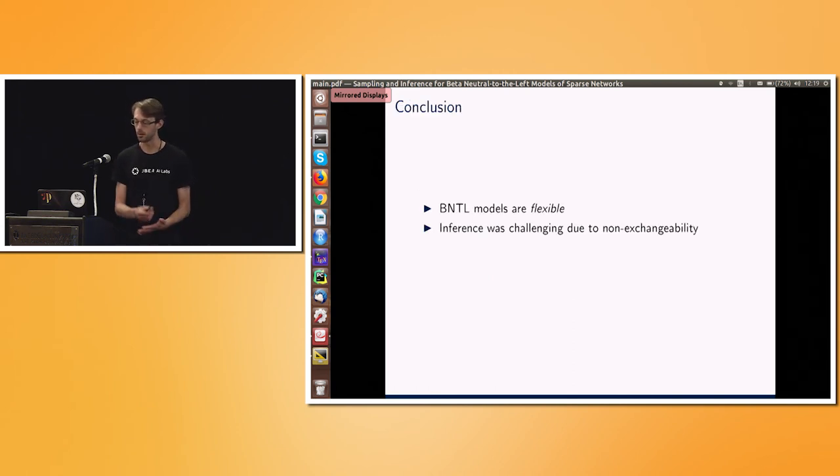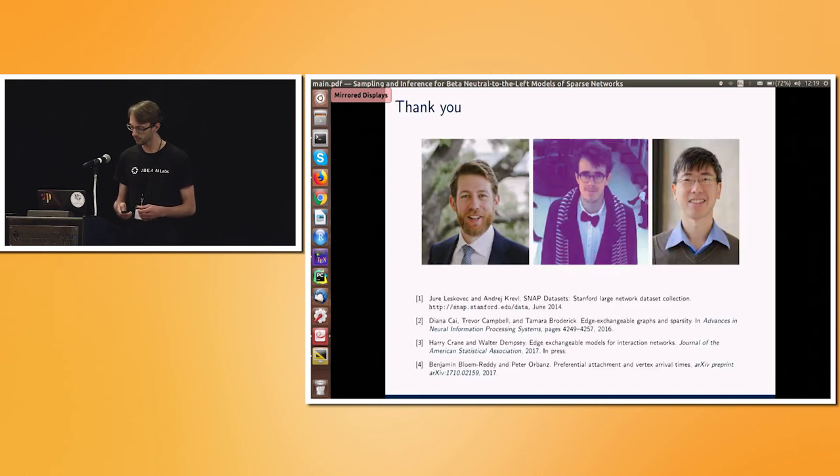So to sum up, we have these beta-neutral to the left models, which are very flexible in the kinds of things that they can represent. Dense networks, sublinear sparse networks, linear sparse networks. But they're not exchangeable, so the inference was difficult. And our work said, actually, we can exploit exchangeable substructure and get samplers which run in comparable time to the exchangeable models.